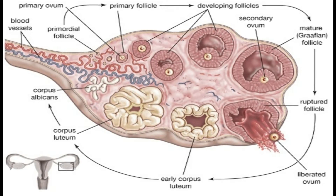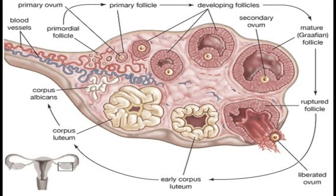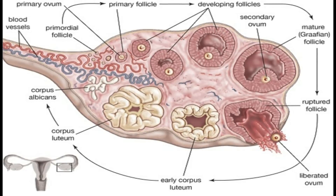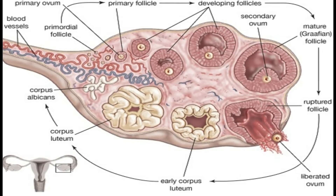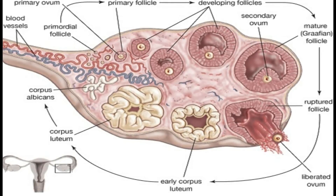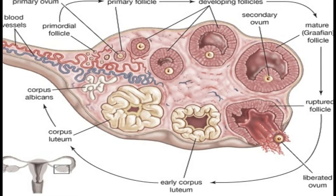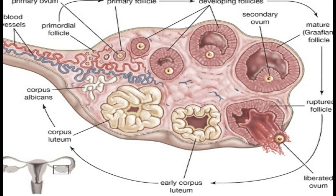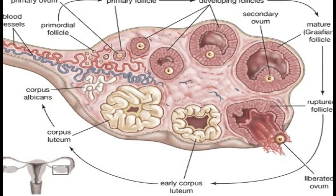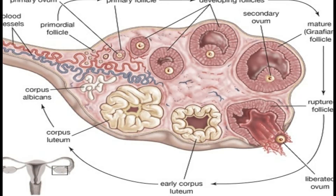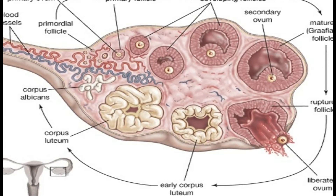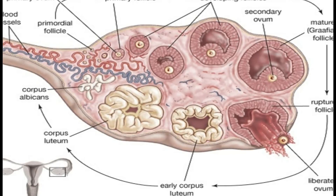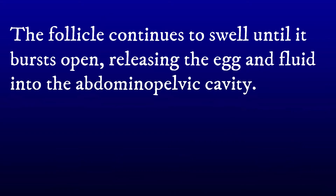The LH surge causes rapid growth on the follicle, with the egg pushed towards the surface. At about day 14, the egg becomes most prominent as a bulge on the surface of the follicle. The follicle continues to swell until it bursts open, releasing the egg and fluid into the abdomen and pelvic cavity.